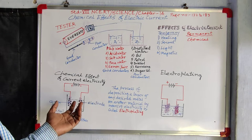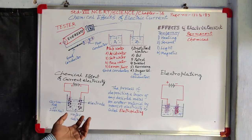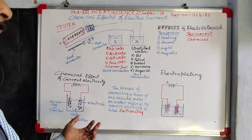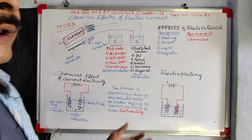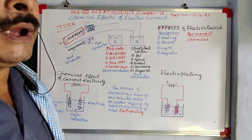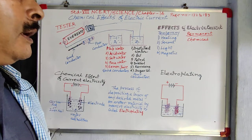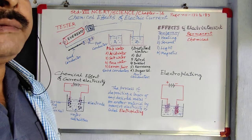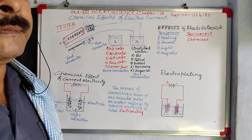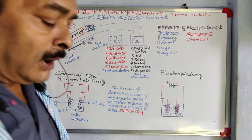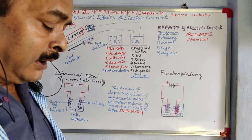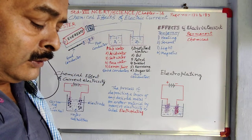We can see another chemical effect — and this one is very useful industrially, domestically, and economically. This chemical effect is very widely used and has been given a special name: electroplating. For electroplating, let us see in your textbook where it is shown.